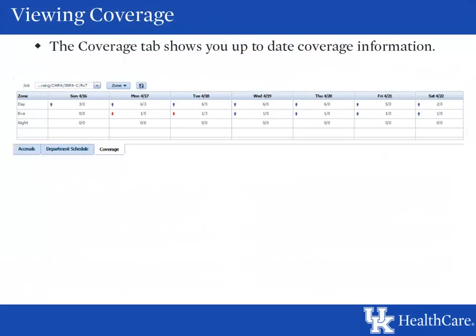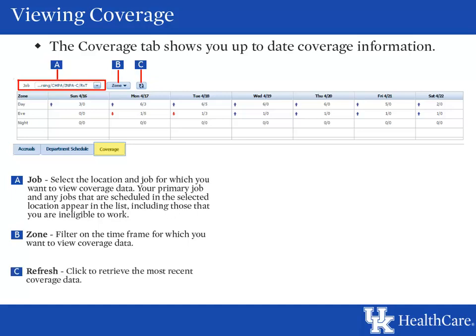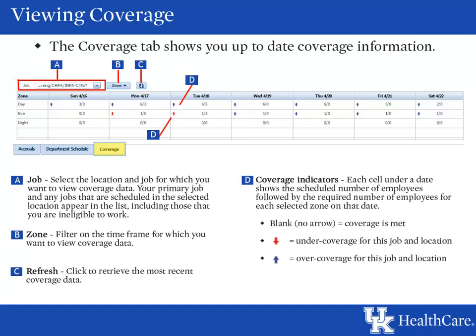The coverage tab is a support tab located at the bottom of your calendar and shows the coverage for your department. Section A is the location and job for which you want to view coverage data — your primary job and any jobs scheduled in the selected location appear in this list, including those you are ineligible to work. Section B is the zone filter, allowing you to filter on the time grain for which you want to view coverage data. Section C is the refresh button to retrieve the most recent coverage data. The D items are coverage indicators — each cell shows the scheduled number of employees for each selected zone on that date. Blank or no arrow indicates coverage is met, a red down arrow indicates under coverage, and a blue up arrow means over coverage.